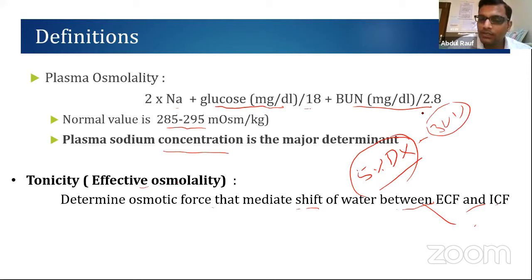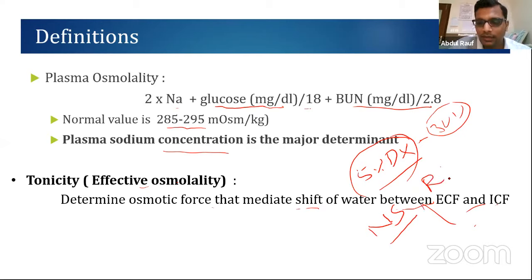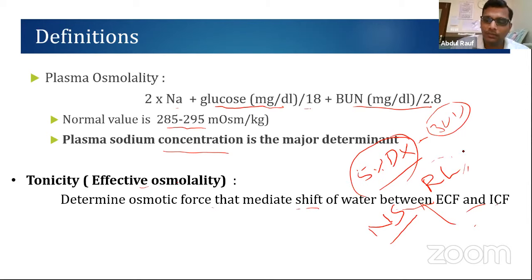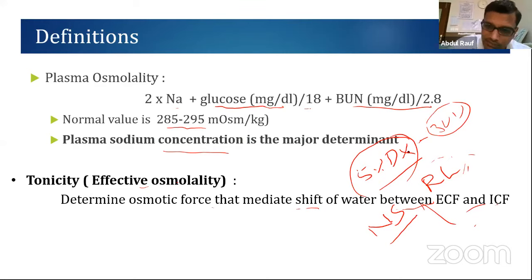Normal saline and Ringer's lactate are approximately isotonic. 5% albumin is also isotonic. 5% dextrose is isosmolar but hypotonic. When you add concentrated solute to the ECF, the body tries to maintain osmotic equilibrium, so water moves from the cells to the blood vessels to dilute the plasma osmolarity back toward normal.